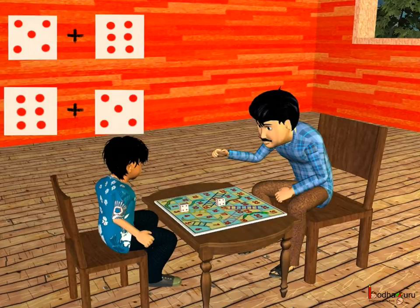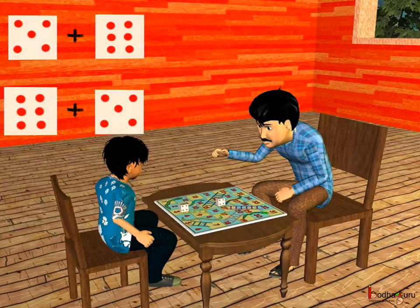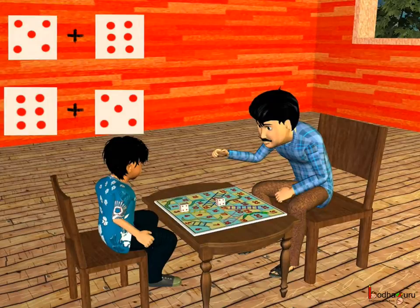That is, first dice gives 5 and the second dice gives 6. Or, the first dice gives 6 and the second dice gives 5.